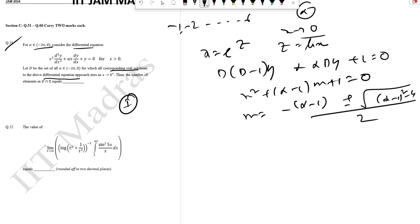Case 1: alpha equal to minus 1. So m equal to 1 and 1, repeated roots. So y equal to c1 plus c2 z, which is log x, all to the power x, or c1 plus c2 log x times x. So limit as x tends to 0, the value of y will be 0.